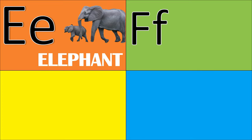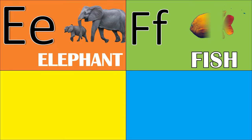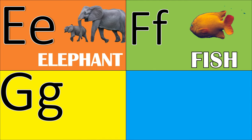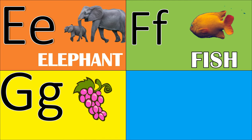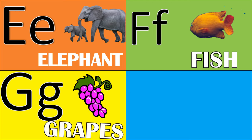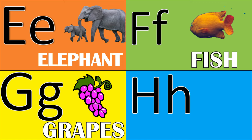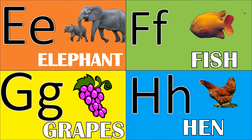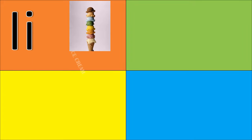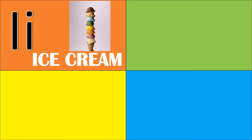F for fish, G for grapes, H for hen, I for ice cream, J for jug.